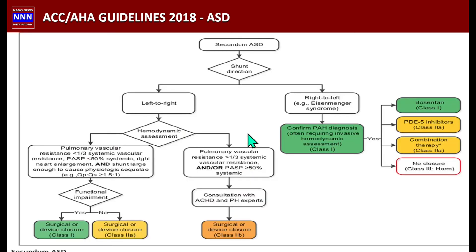Now let us look at the ACC/AHA 2018 flowchart for atrial septal defect — once you understand the basic parameters, this chart becomes straightforward. First, we identify a secundum atrial septal defect with a left-to-right shunt.